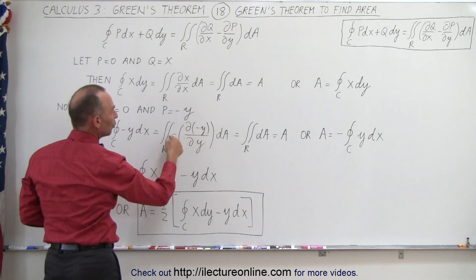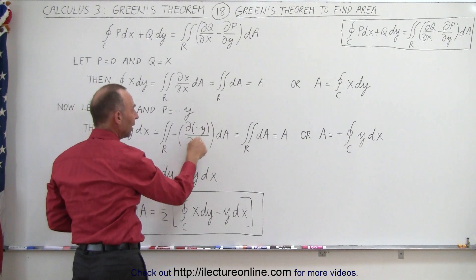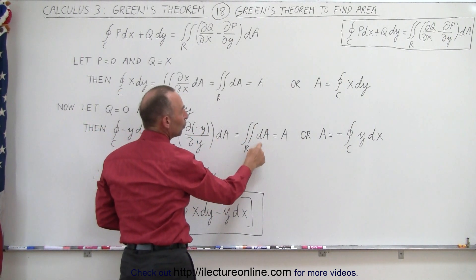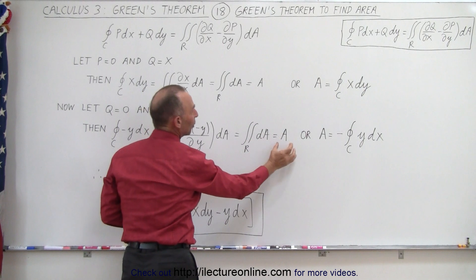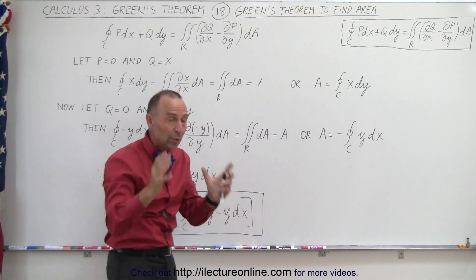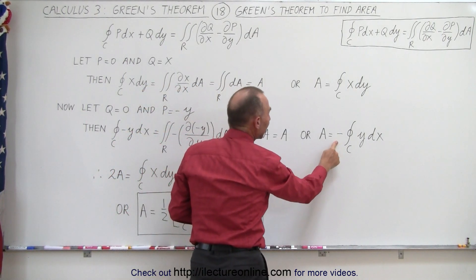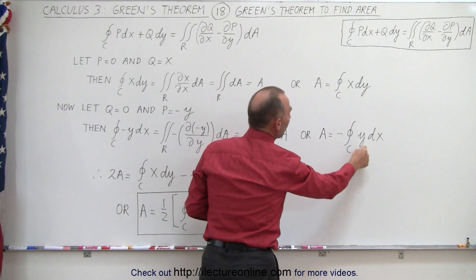Notice that the two negative signs cancel out so this becomes 1 times dA, and again the integral over the region enclosed by the path is simply going to be A, and so we can express the area of that region enclosed by the path as a negative line integral of y dx.